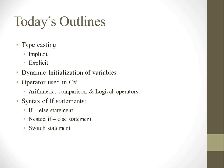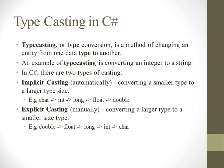Let's start today's lecture. First, we will learn what typecasting is. Typecasting means type conversion — it is a method of changing an entity from one data type to another data type. For example, converting a string into an integer data type or an integer into a string data type. There are two types of casting: number one, implicit casting, and number two, explicit casting.